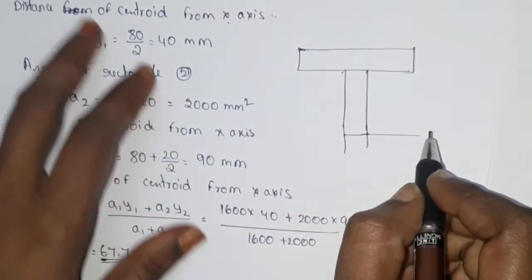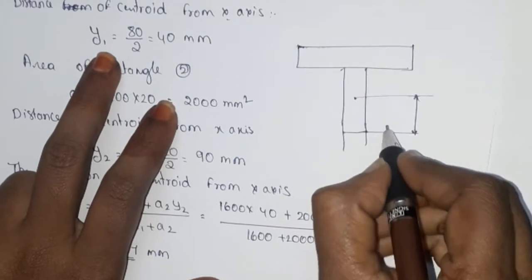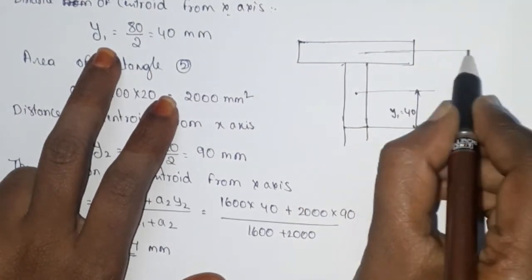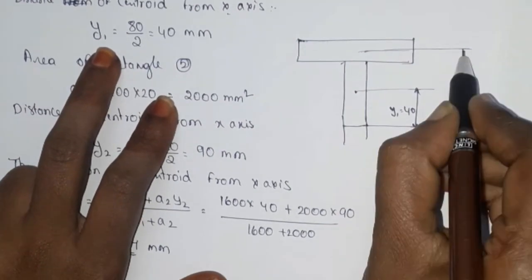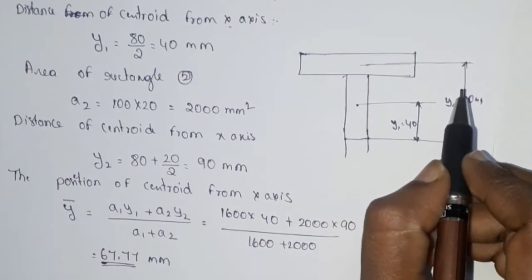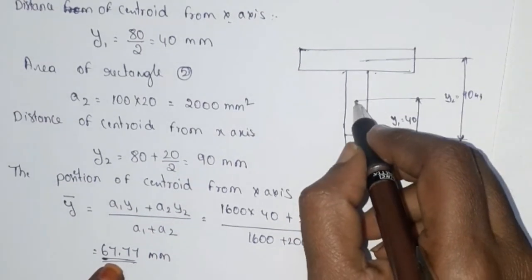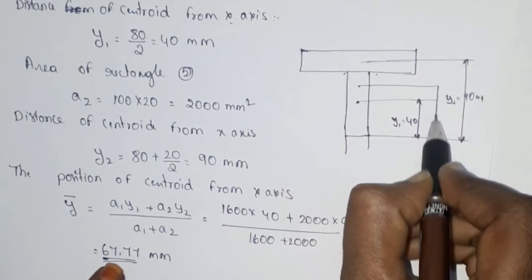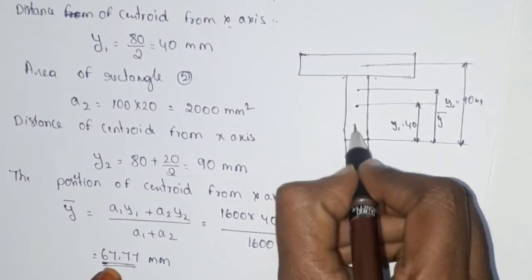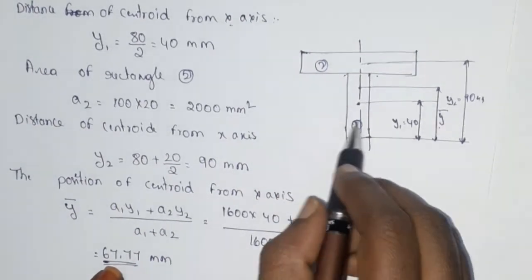So first, y1 equal to 40 mm. So next, y2 equal to 90 mm. Now we have the value — this is 80, this is 40 — so this is our ȳ bar. This is the first rectangle and this is the second rectangle.